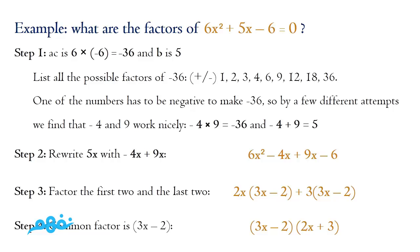We rewrite the b term in the new form: negative 4x plus 9x, which really equals 5x, but we split it to find further common factors. The new form of the equation becomes 6x² minus 4x plus 9x minus 9. Then we factor the first two terms and the last two terms. The first two terms, 6x² and negative 4x, share a common factor of 2x, giving 2x(3x minus 2). The last two terms, 9x minus 9... wait — 9x minus 6, share a common factor of 3, giving 3(3x minus 2).